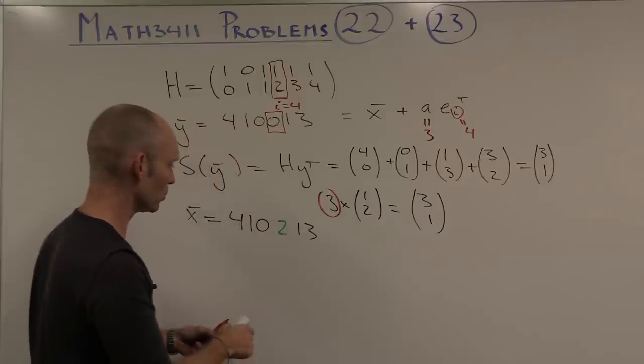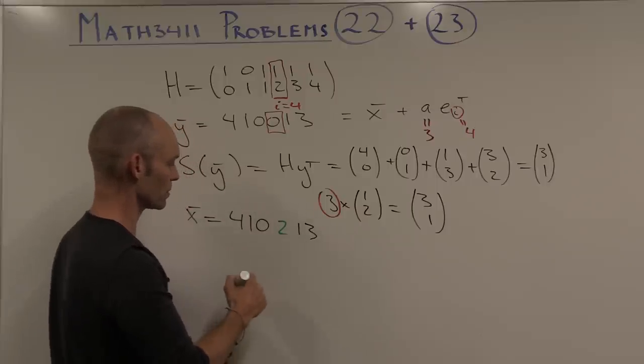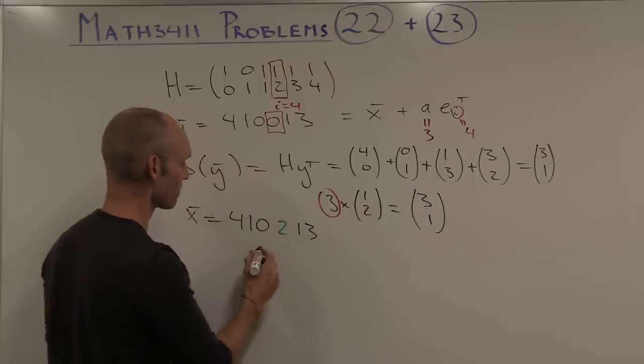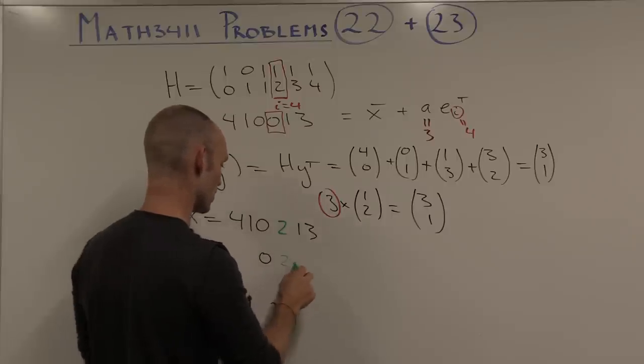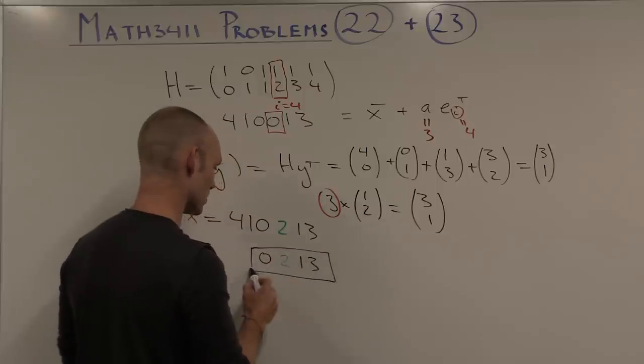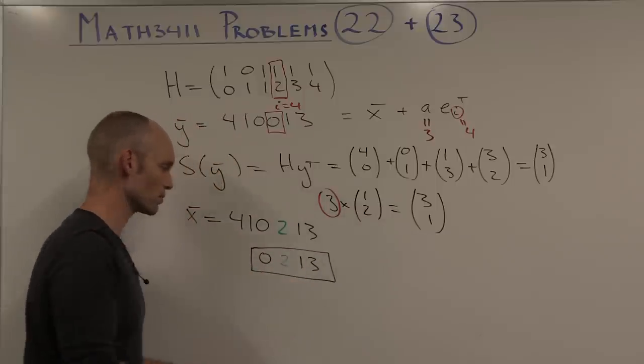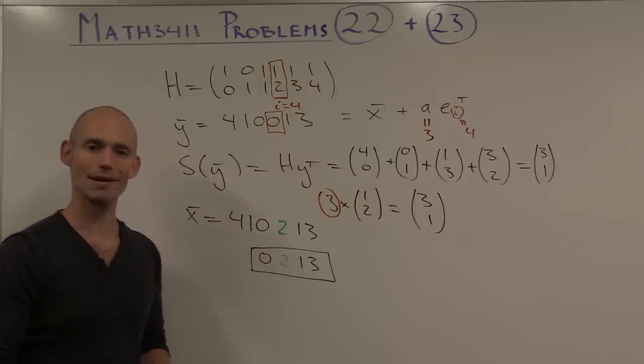Now to decode, all we need to do is find the information bits, which were the 4 last ones here. So we have 0, 2, 1, and 3. And that's the decoded word arising from this corrected word here. And we're all done. So thank you very much.